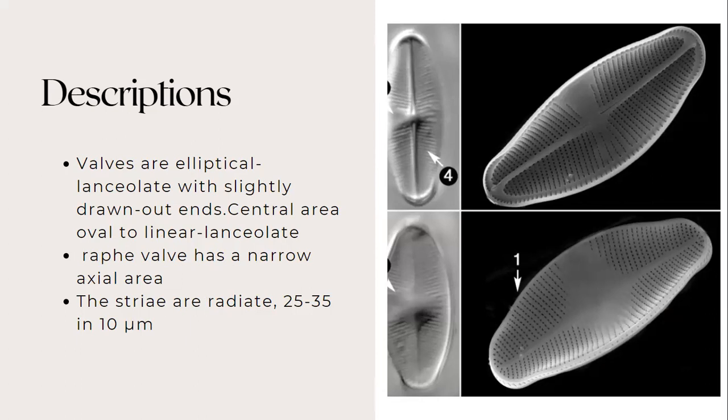The raphe valve has a narrow axial area. The striae are radiate, 25 to 35 in 10 micrometers.